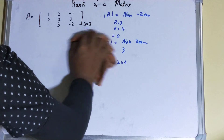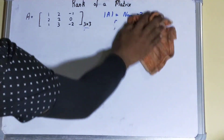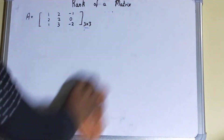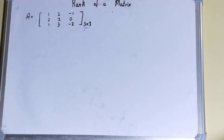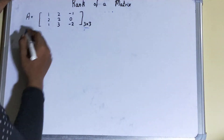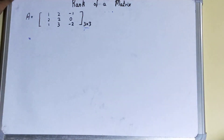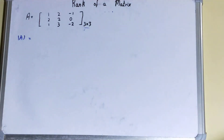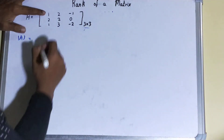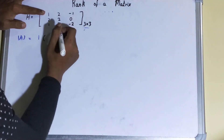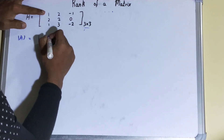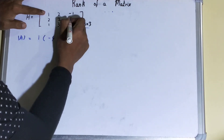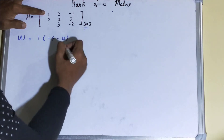Let's try to see with the help of an example — then things will be clear. Here is a 3×3 matrix, so the highest possible rank is 3. We'll find its determinant, starting with the first element.